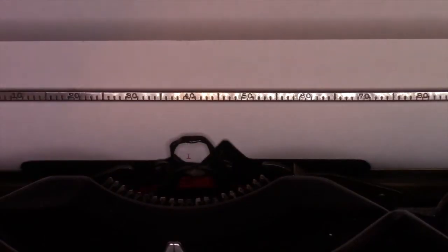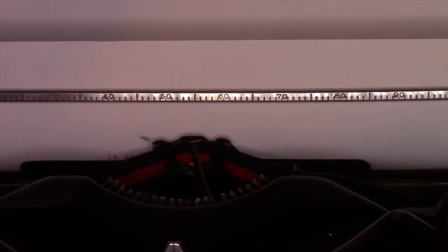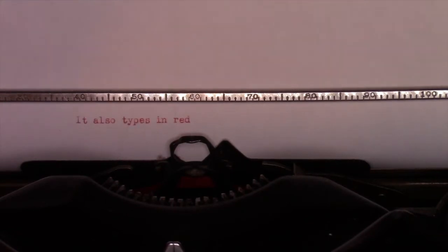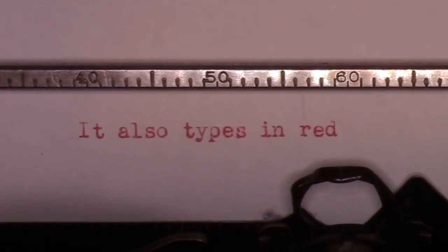People also find it surprising that there's a lever on the front of some of these old typewriters that allows them to type in different colors. If you've got the right type of ribbon, this one has a setting for white, so I could actually go back and white out words if I wanted to. But as you can see here, it also types in red.